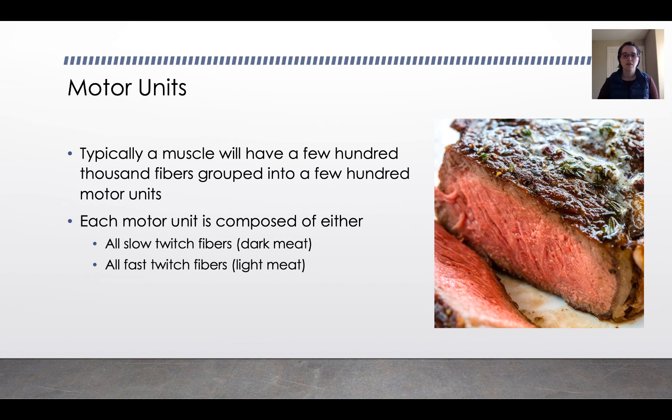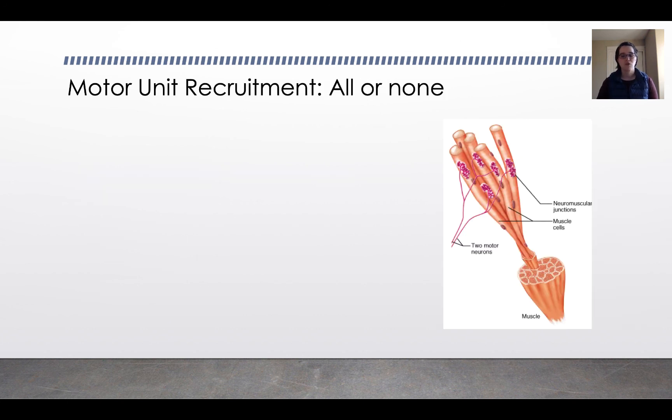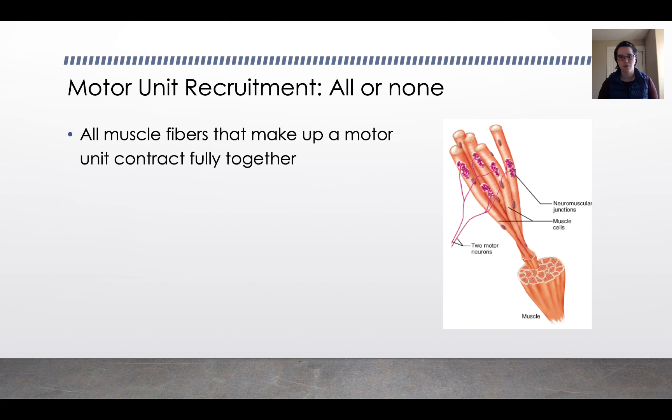Regardless of which type of fibers a muscle is made up of, the motor unit represents the smallest unit of force control for the muscle. So if you want to contract the muscle more, you need to recruit more motor units. And all of your motor units recruit on an all-or-none principle. So all of the muscle fibers that make up a motor unit contract fully together. There's no partial contraction of some of them. It's all or none.